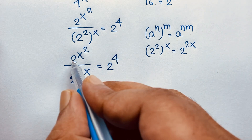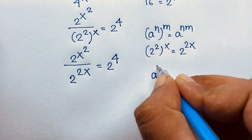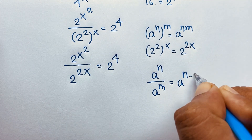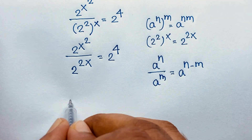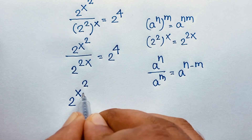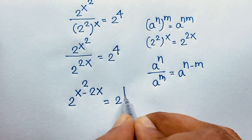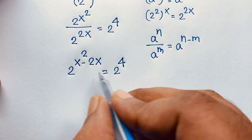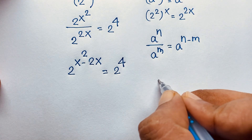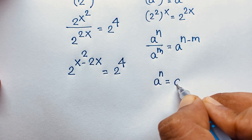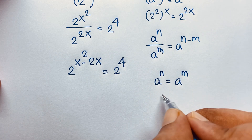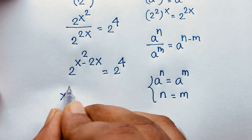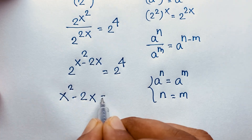Now the base on both sides is 2. According to the formula, a to the power n over a to the power m equals a to the power n minus m. Applying this, it will be 2 to the power x squared minus 2x is equal to 2 to the power 4. Since the bases are equal — a to the power m equals a to the power n implies n equals m — it will be x squared minus 2x is equal to 4.